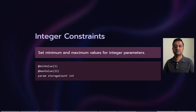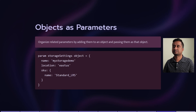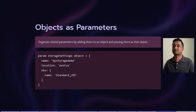Integer constraints work similarly with min value and max value. For example, this is a good scenario when you want to create a number of storage accounts — you could allow a minimum of 1 or a maximum of 12 at the same time, and use these values when creating them.